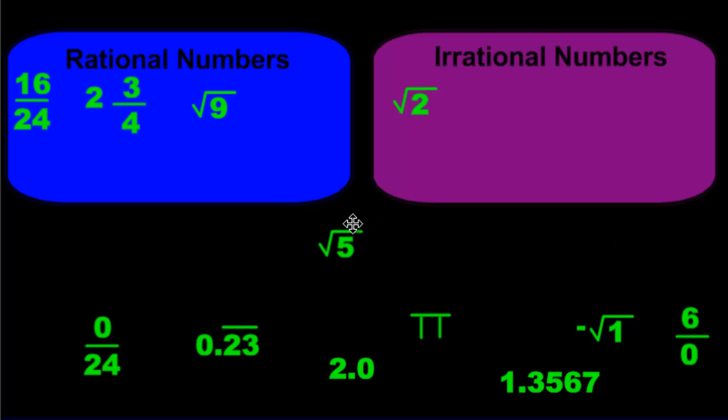How about root 5? Square root of 5. Forever repeating decimal. 0 out of 24. Absolutely. This is where it goes. It's 0 over 24.